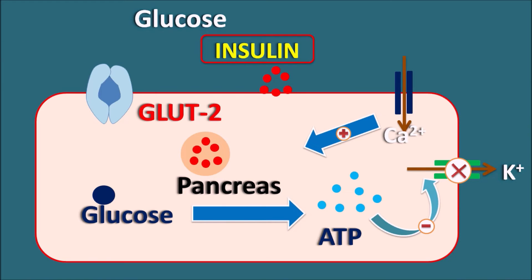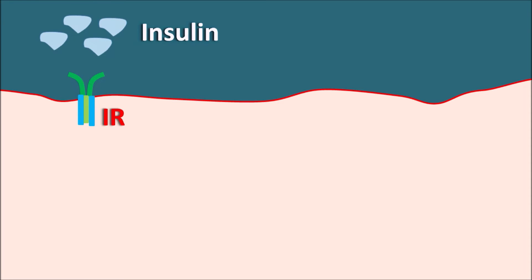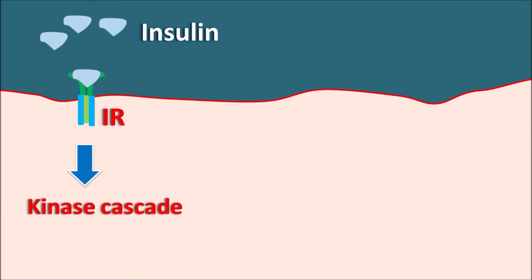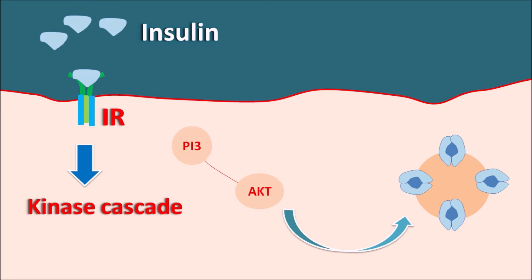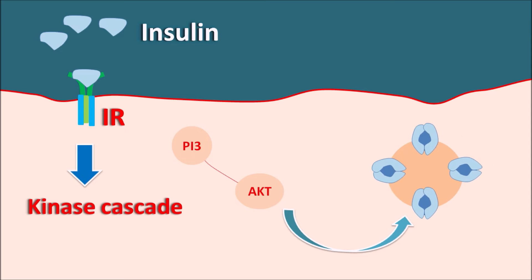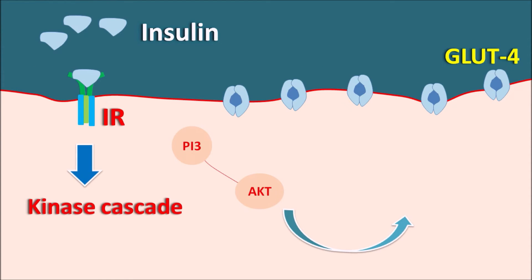Now let us see how insulin acts on other cells to increase glucose uptake. Various cells have insulin receptors, which are tyrosine kinase-linked receptors. When insulin is released from beta cells, it binds these receptors, activating a kinase cascade. One important action is to increase glucose uptake by synthesizing glucose transporters via the PI3 and AKT pathways, promoting gene transcription and protein synthesis. The proteins synthesized are GLUT4 receptors, which are stored as polymers in vesicles. These vesicles undergo exocytosis, expressing GLUT4 receptors on the cell membrane for glucose absorption.